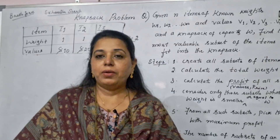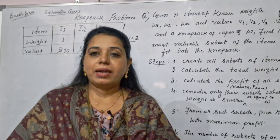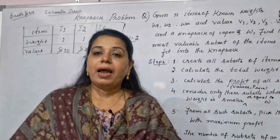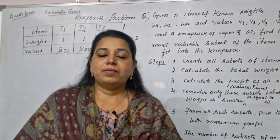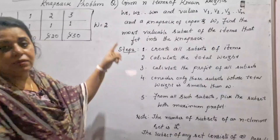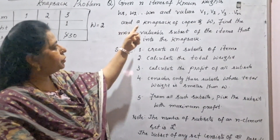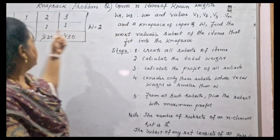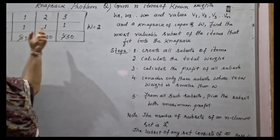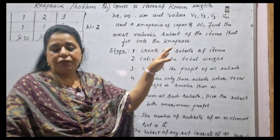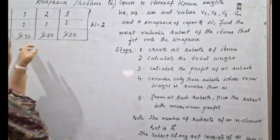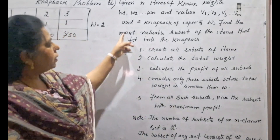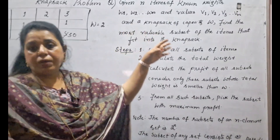You are given an opportunity to select items and fill that knapsack bag and take it as a gift. You will try to pick items that have a higher price, while also ensuring that the total item weight does not exceed the capacity of the bag. The problem statement gives n items of known weights w1, w2 up to wn, and values v1, v2, v3, and a knapsack of capacity W.